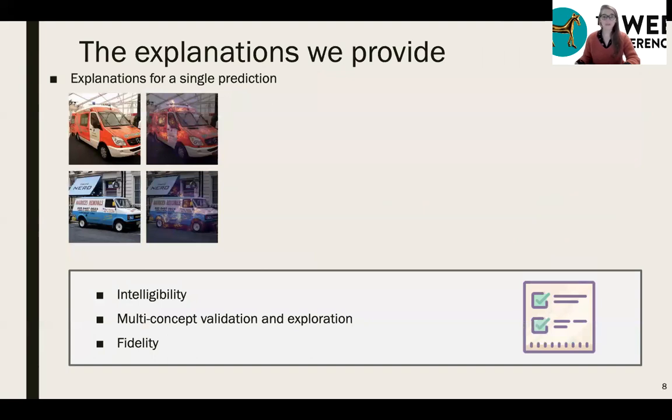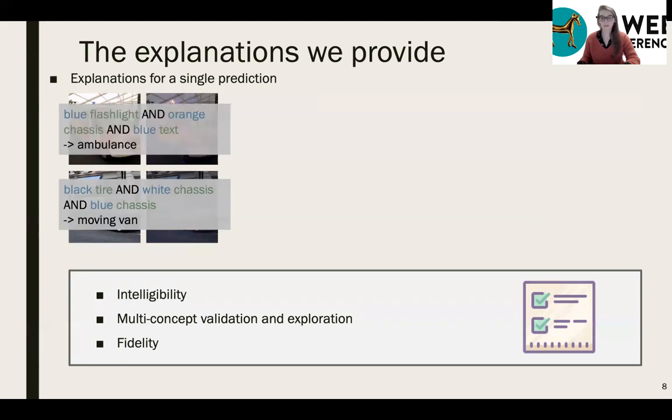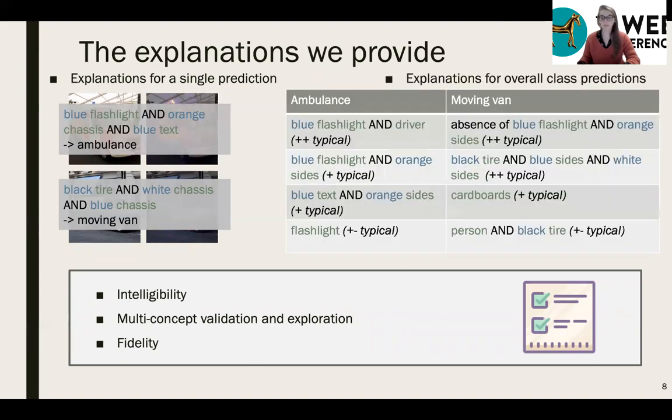So based on these requirements, what are the explanations we ourselves provide in this work? At the local level, they would look like the following. There are rules which associate concepts, so entities, attributes and combinations to each class. And most importantly, at the global level, they present the rules that are more or less typical of the mechanisms of the model for the different classes. The rules are associated with a typicality score in order to rank them. For instance, we see that the ambulance is associated with the flashlight and the orange color with rather high typicality, but with even higher typicality, it's associated with the driver of the ambulance, which shows an undesired bias in the model's mechanisms. So this answers the first two requirements by design. And fidelity is allowed by the methods that we actually developed for getting these explanations.